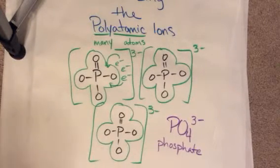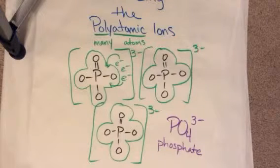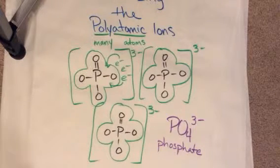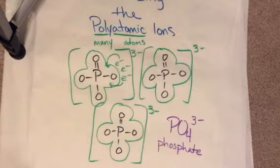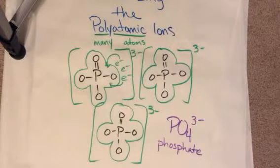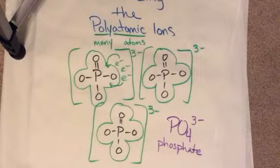And the name of this thing is called phosphate. Phosphates are PO4. The formula is always the same. And that's one that we just have to know. When I say phosphate, you need to know the formula is PO4 and it has a three minus charge.